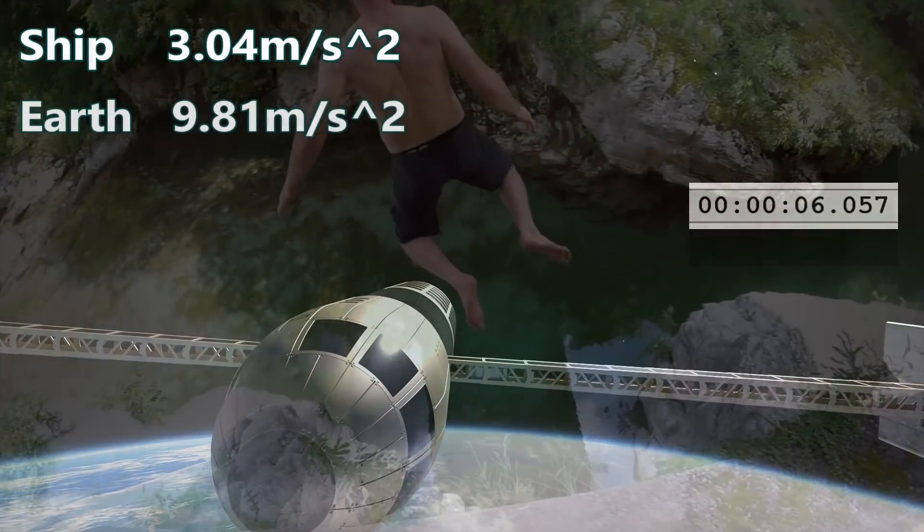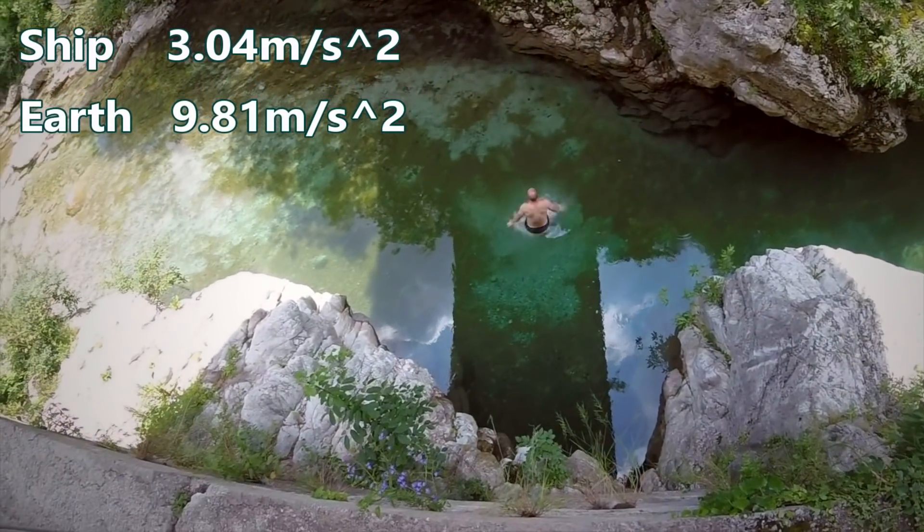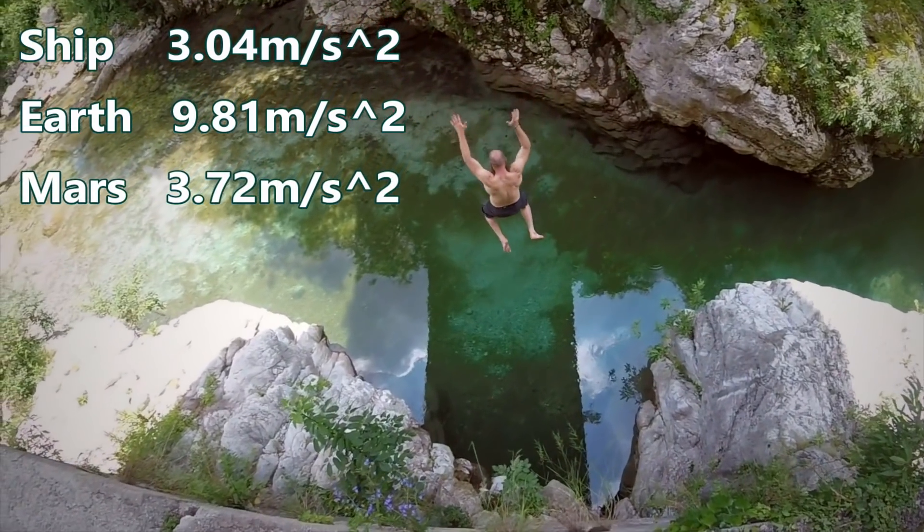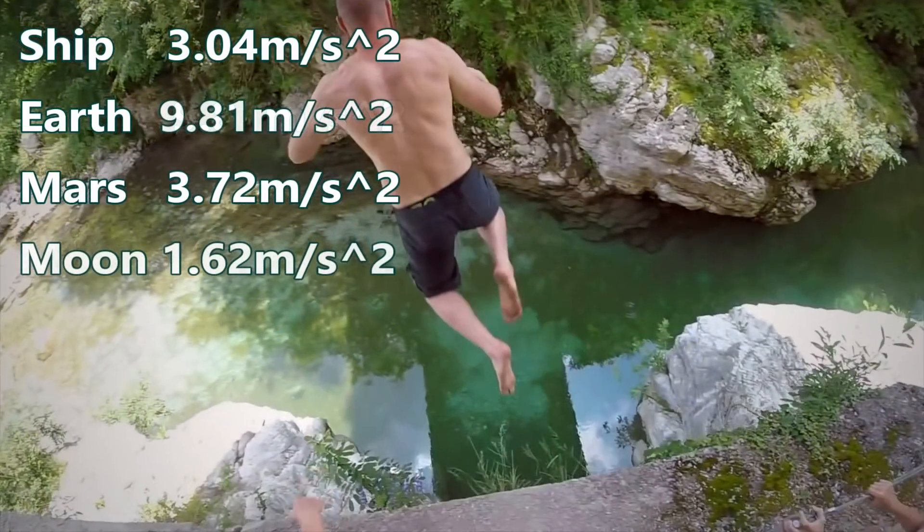Gravity on the Earth has an effective acceleration of 9.81 meters per second squared. Gravity on Mars is about 3.72 meters per second squared, while gravity on the Moon is 1.62 meters per second squared.